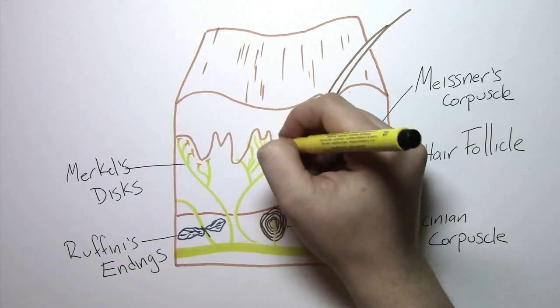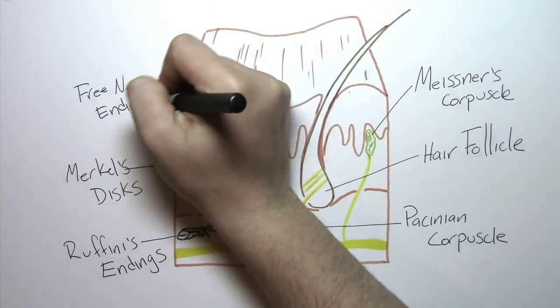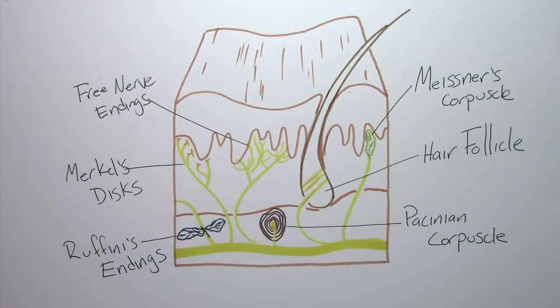Free nerve endings are mechanoreceptors that activate in response to severe pressure, heat, inflammation, or chemical stimuli, resulting in a sensation of pain. All in all, these sensory receptors tell the brain that something's there.